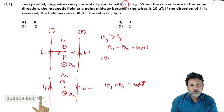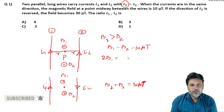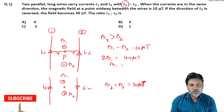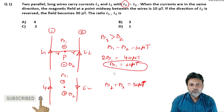Adding the two equations: 2B1 equals 40 micro tesla, so B1 equals 20 micro tesla. From the subtraction equation, B2 equals 10 micro tesla.